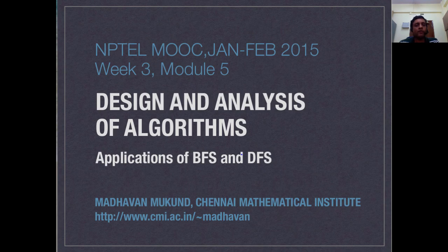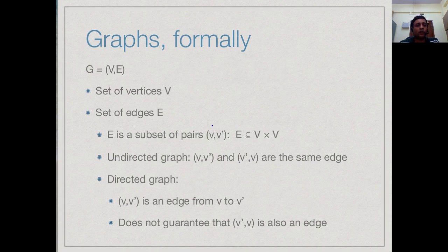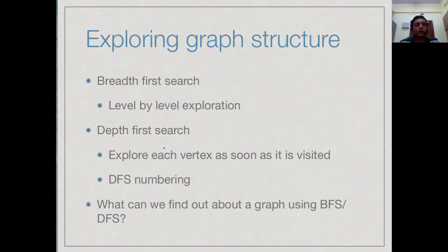We have seen how to use breadth first and depth first search to explore whether there is a path from a source to a target vertex, but one can do a lot more with these two procedures. Recall that a graph is a set of vertices and a set of edges which are connections between the vertices, and these may be directed or undirected. Now let's see how we can use BFS and DFS to find out more about the structure of the underlying graph.